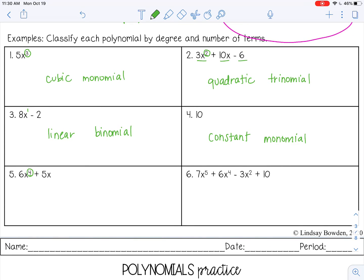Number five has a degree of 4, so it's quartic. Two terms, so binomial.